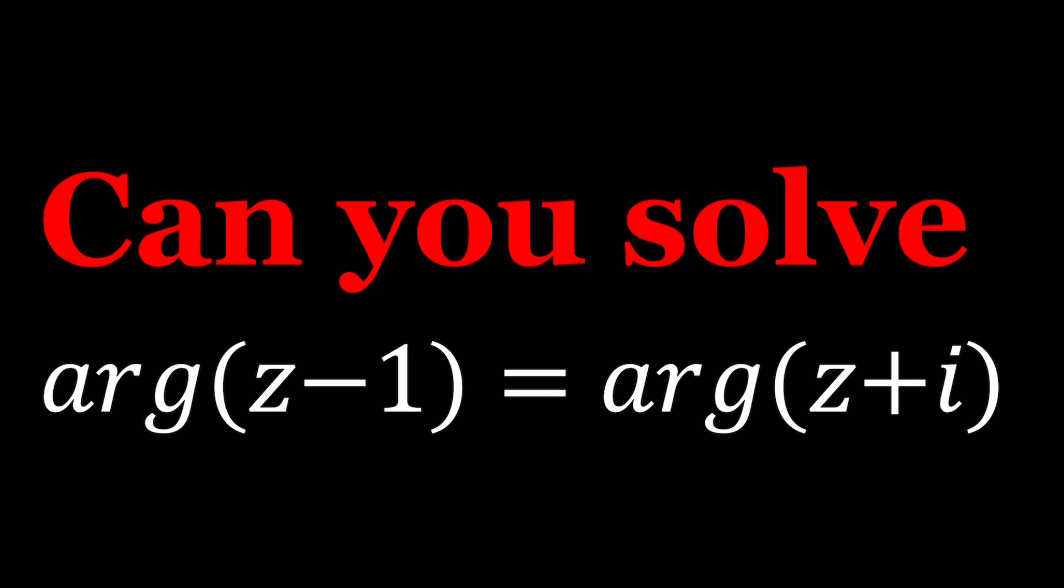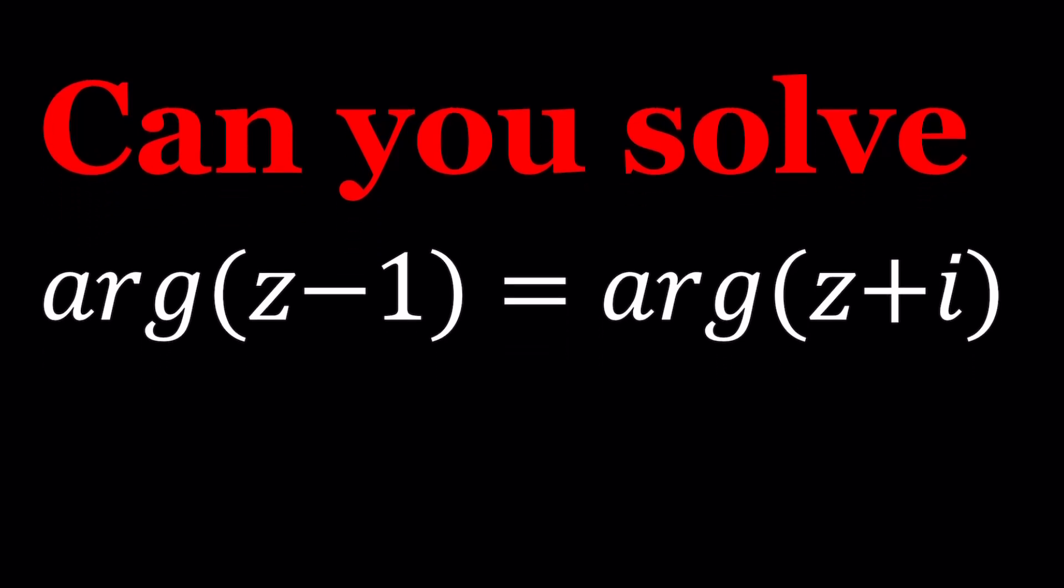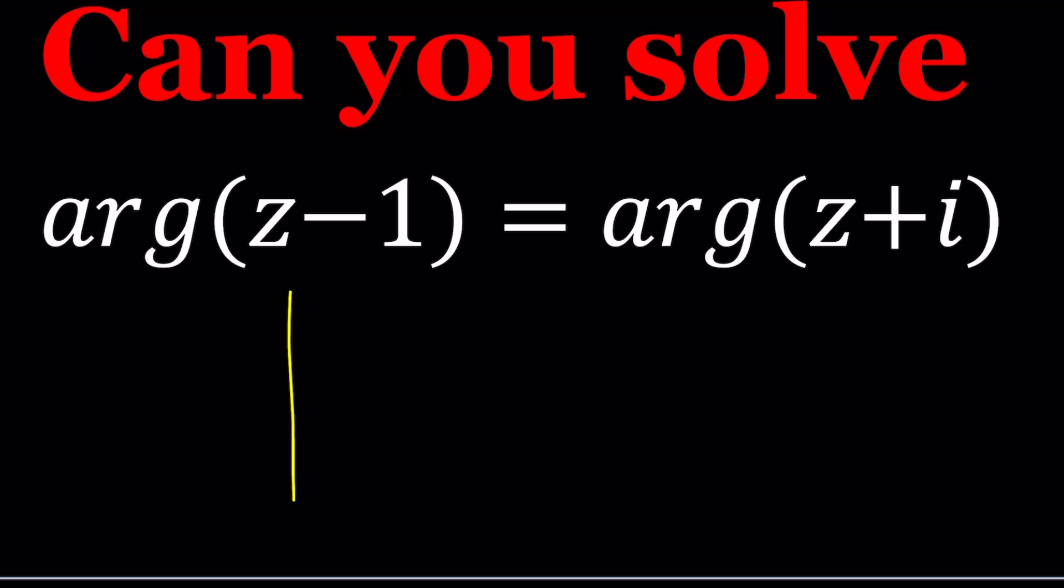Now what does argument mean? You'll hopefully remember from lecture videos that when you plot a complex number in the complex plane, that's going to be represented by a number or a vector, and then you can think about the angle that it's going to make with the positive real axis. We can call that theta, and this length or the distance between this Z and the origin is the modulus or the absolute value of Z. We can also call that R.